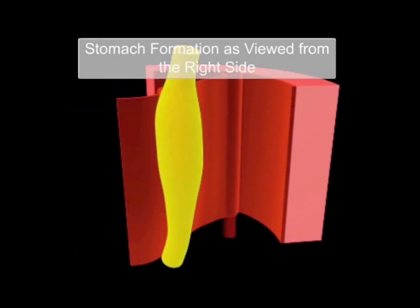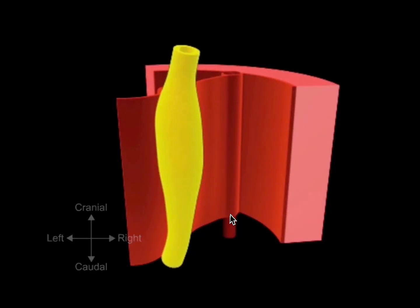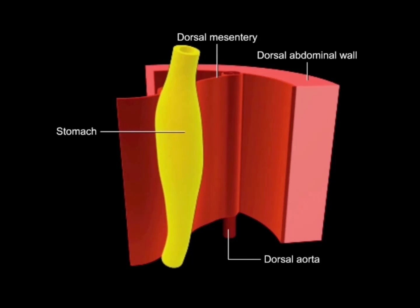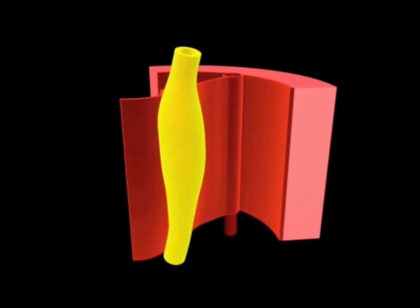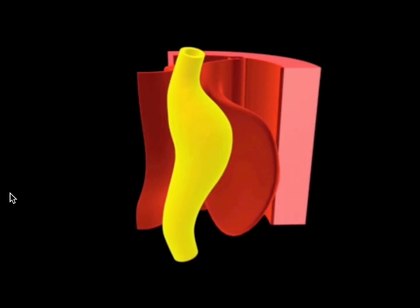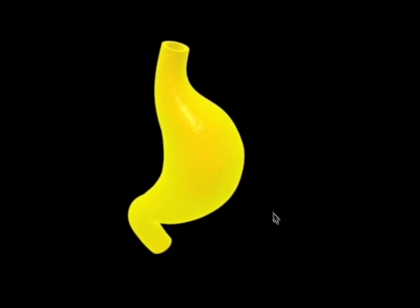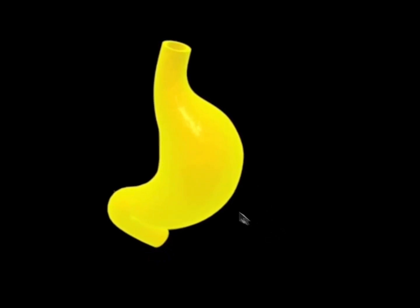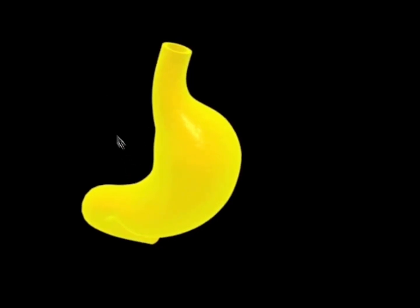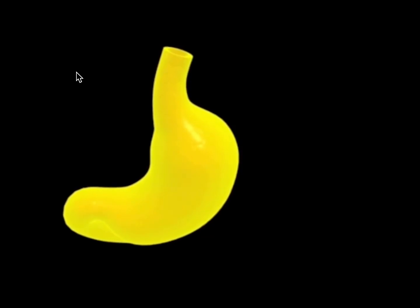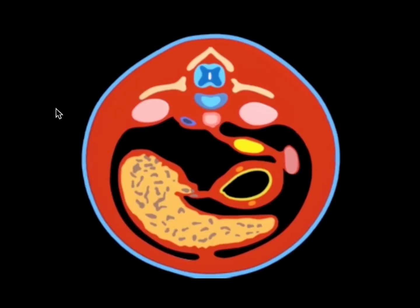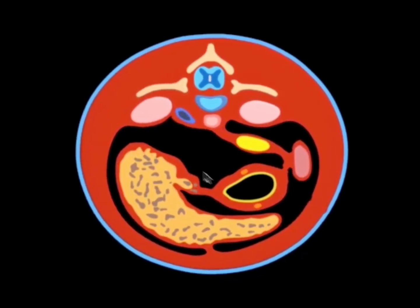The primordial stomach is a fusiform dilation of the caudal end of the foregut, so it starts off looking like a flat fish. We saw it rotating 90 degrees clockwise in transverse section; now looking at it ventrolaterally, the dorsal border of the stomach becomes the greater curvature, pushing to face the left side, while the ventral border — the lesser curvature — pushes to face the right.